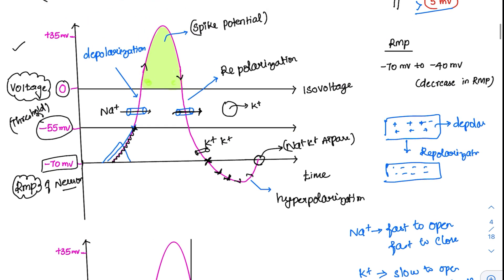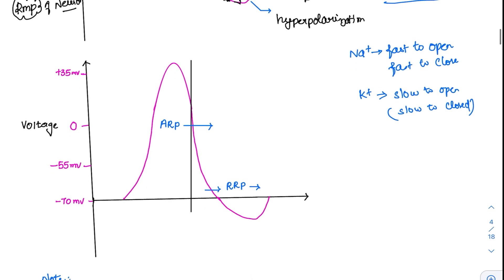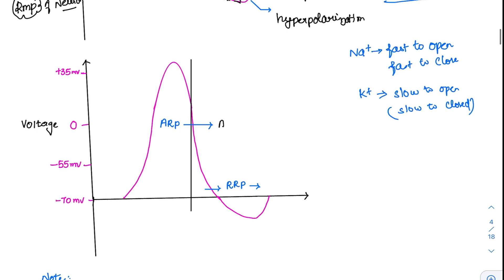Now comes the concept of the refractory period. There is an absolute refractory period and a relative refractory period. Absolute refractory period means that during this period, whatever second impulse you give, there will be no increase in the action potential height or strength — there will be no response at all, no matter how strong the stimulus. In the relative refractory period, if you give a strong enough stimulus, the neuron can be excited again.